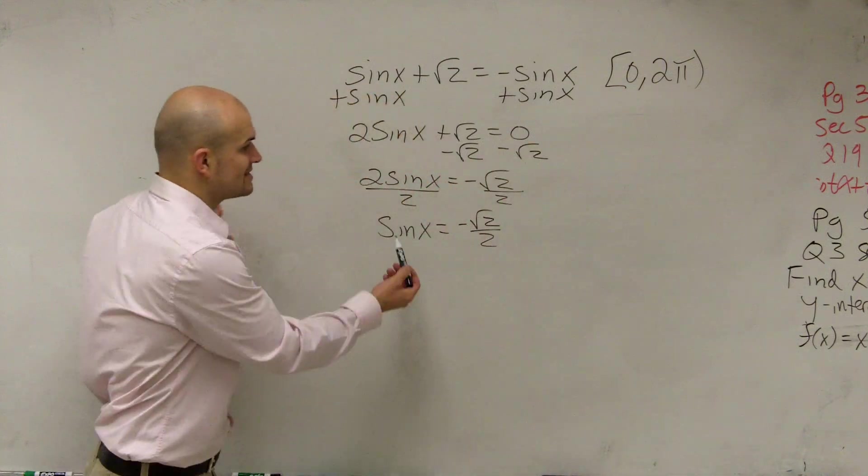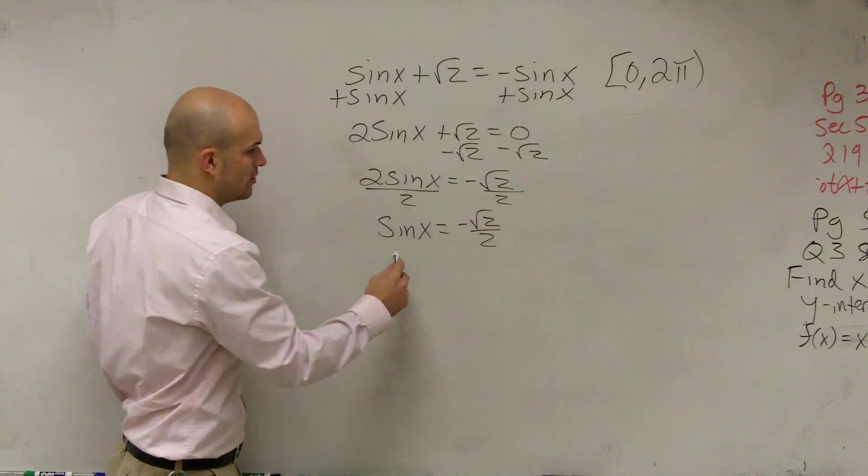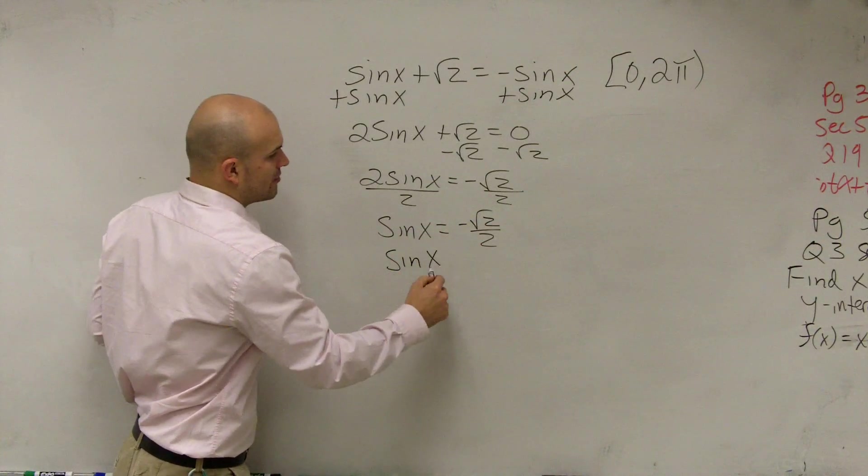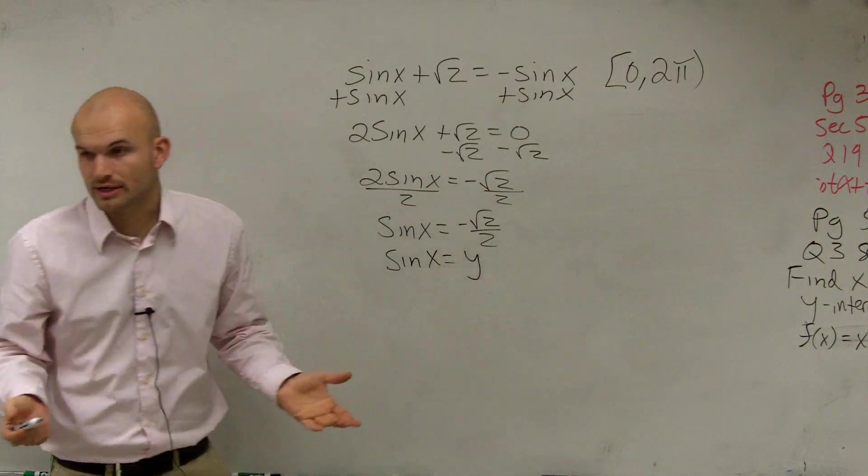So to find our answer, again, it says the sine of what angle equals negative square root of 2 over 2? Well, sine, remember when we're dealing with points that are on the circle, represented our y-coordinate, right?